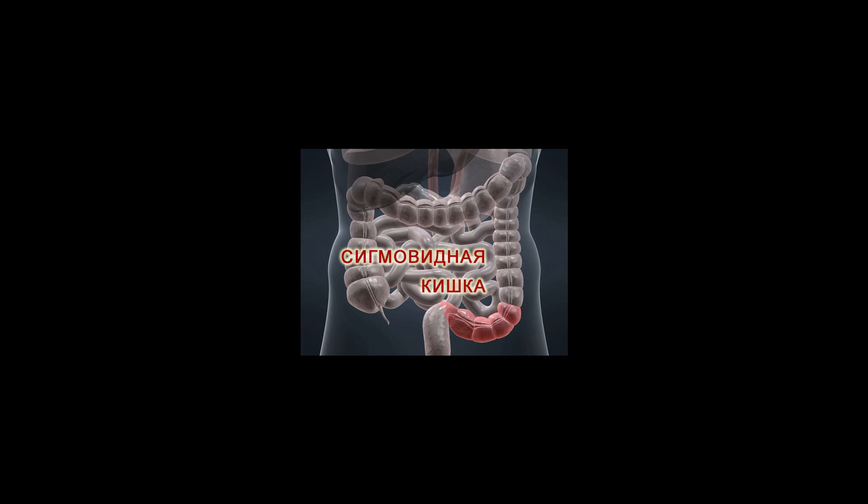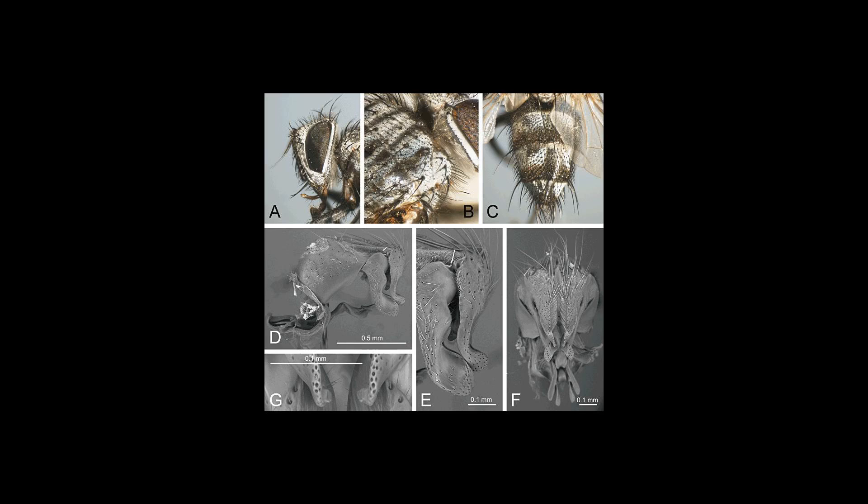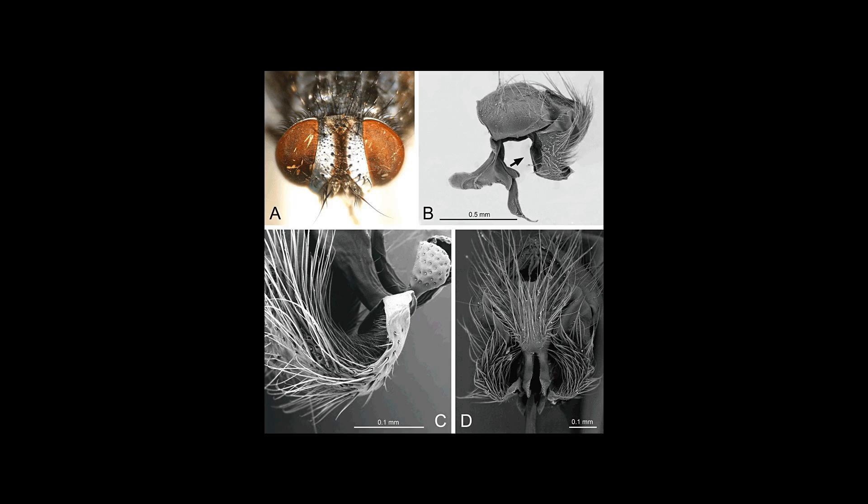Dolichocolon may predispose to abnormal rotation, see volvulus, and interposition between the diaphragm and the liver. See Chilaiditi syndrome.